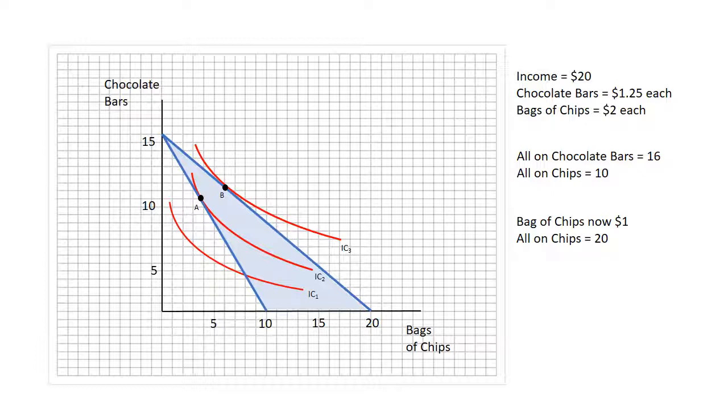One way to think of that is that this is like increasing the consumer's income, so they're richer in some sense because the price of chips has fallen. They have more options available to them and they're going to consume more than they were able to before.